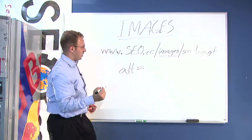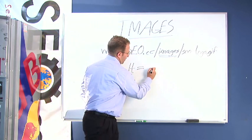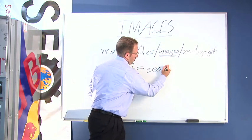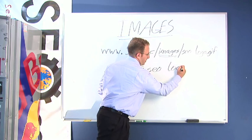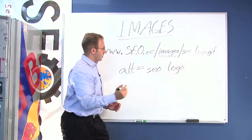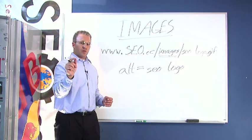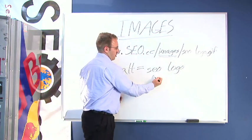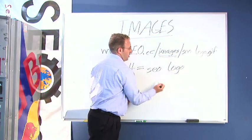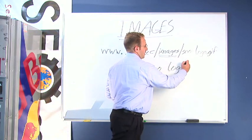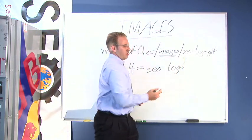And at the end of the image source you can put alt equals seologo. This is going to allow you when you roll over with the mouse for seologo to actually appear here and for it to be relevant and linked to seologo.